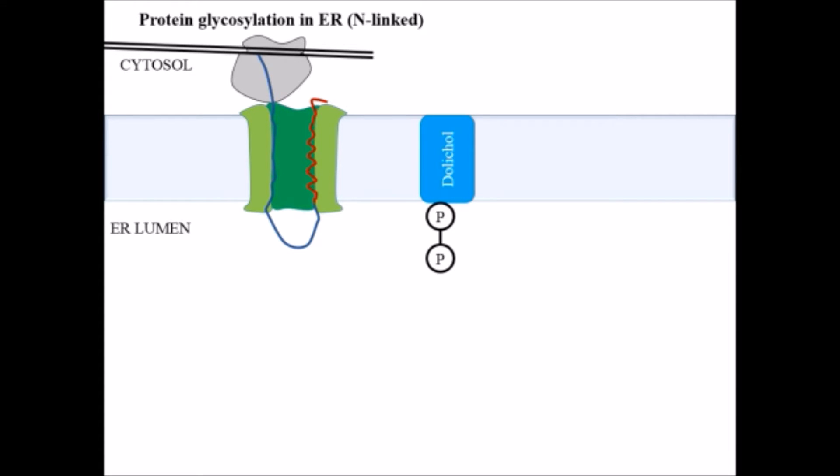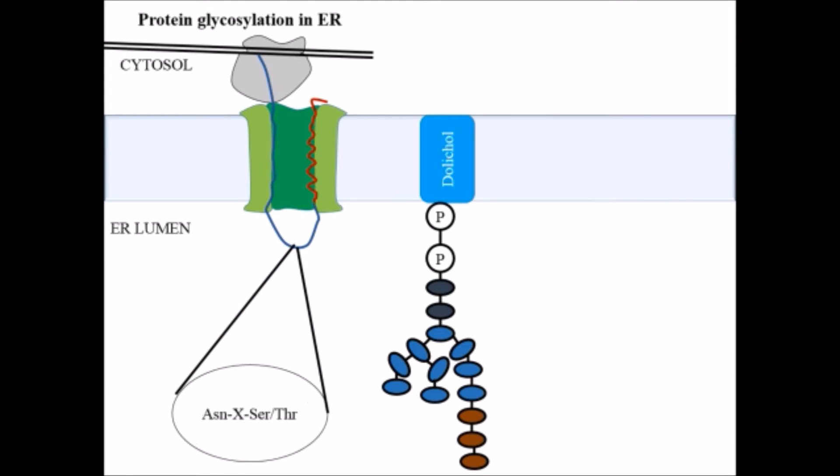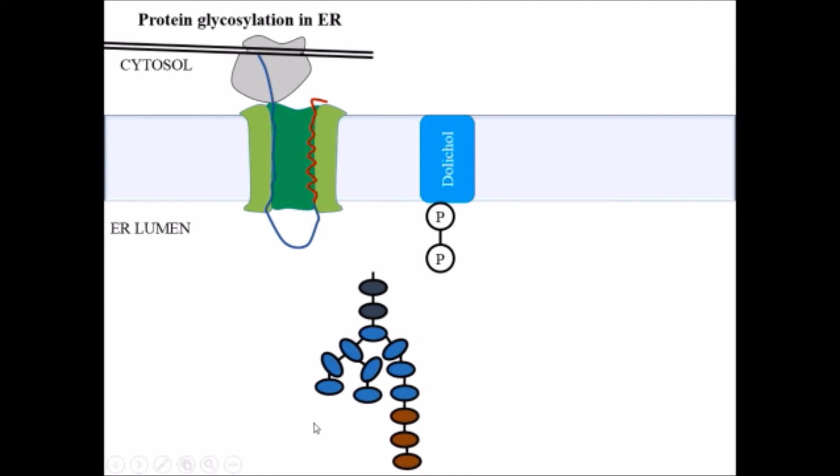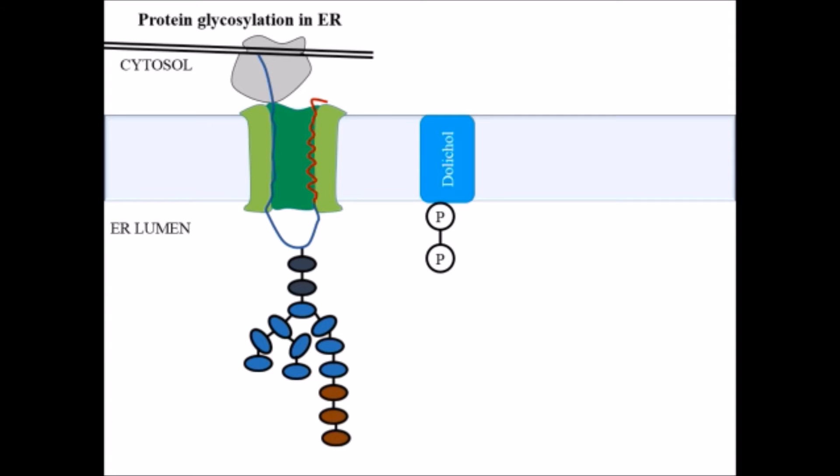Let's first discuss N-linked glycosylation which takes place in the endoplasmic reticulum. On dolichol phosphate, first two molecules of N-acetylglucosamine are added, followed by nine mannose subunits, followed by three glucose sugars. After that, it is transferred to the N-terminal of asparagine. If we look at the newly synthesized protein, we will see a certain sequence: asparagine followed by any amino acid, then serine or threonine.